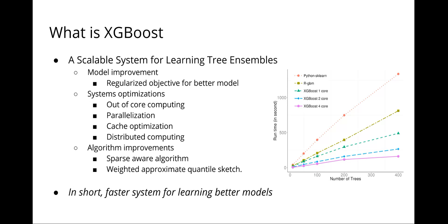In a nutshell, what we do is that we build an end-to-end system to support scalable learning of tree ensembles by introducing important algorithm improvements that help us to deal with sparse data, as well as an approximate quantile approximation algorithm that gives us a good approximation for distributed learning. We also bring system optimizations that help us to be more scalable than all the existing open source packages for tree boosting. In short, we build a faster system for learning better models.